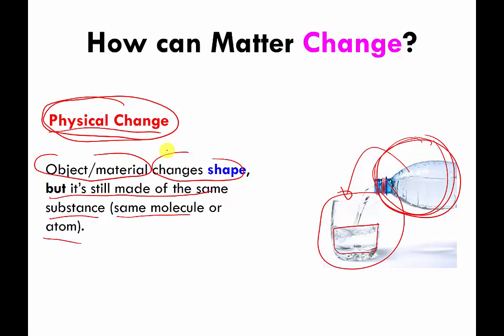It changed its shape, but if you could look carefully enough, the stuff that you just poured into the container is still made of water molecules. They were water molecules in the bottle, and they're still water molecules in the glass. So that's a general example of what a physical change is — the material changes its shape, but the stuff that it's made of doesn't actually change.